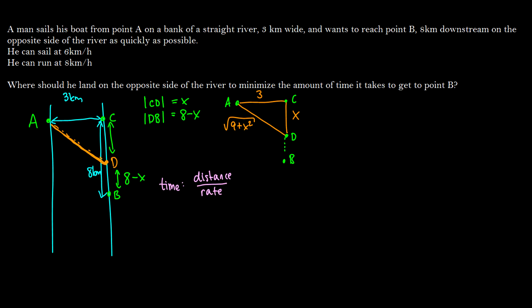So we want to minimize time. So we have two different things here. We have, which I'm going to call this time of rowing, or sailing, is going to be, well, this will be square root of 9 plus X squared, because this line right here is the amount of time we will be taking sailing.